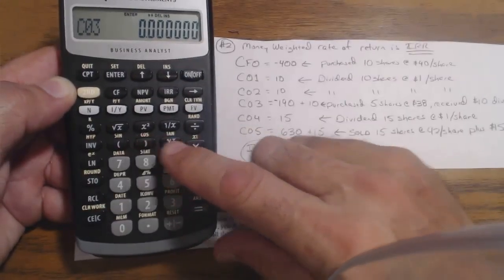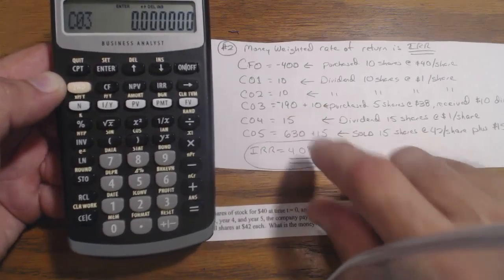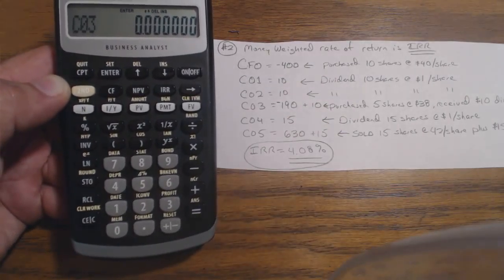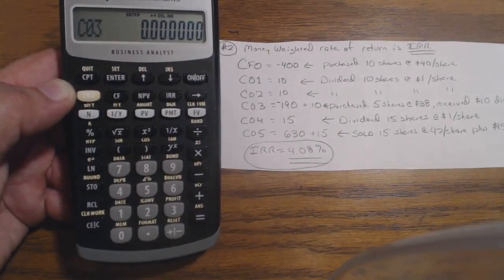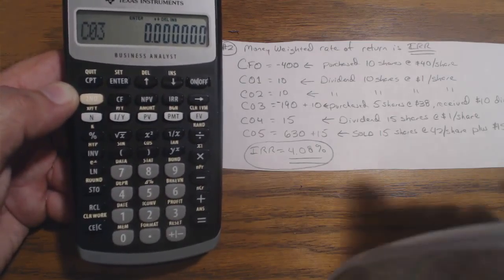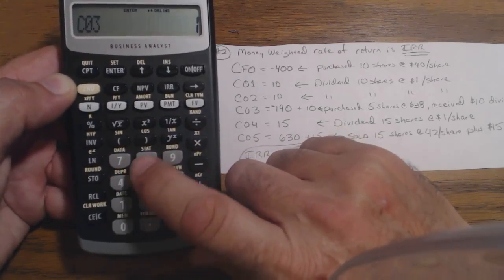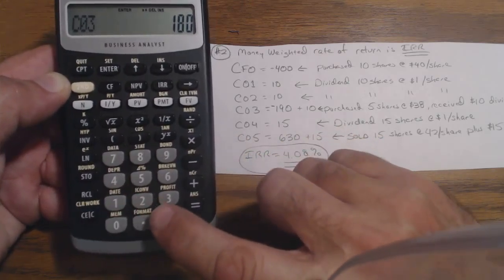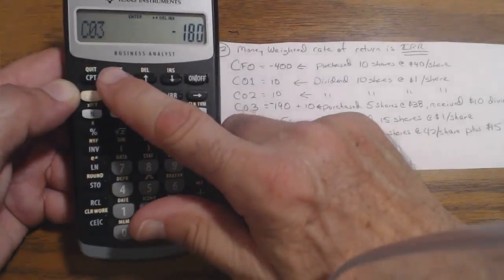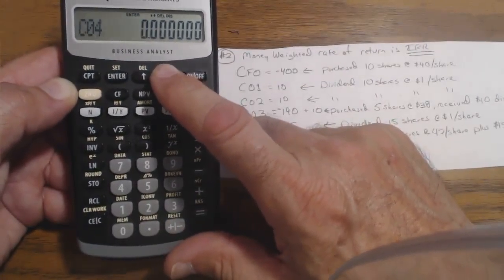Go down. C03. Now that's where we spend another $190 on buying new shares of stock, but we also got a $10 dividend. The $190 is an outflow, so that's a negative. The $10 is an inflow, so that's a positive. So it's a net $180 outflow. 180. Remember the negative sign. You've got to get this stuff right. You hit the enter key. That's frequency 1.